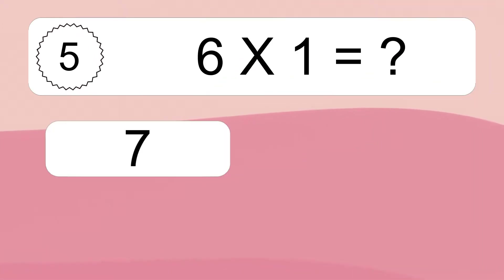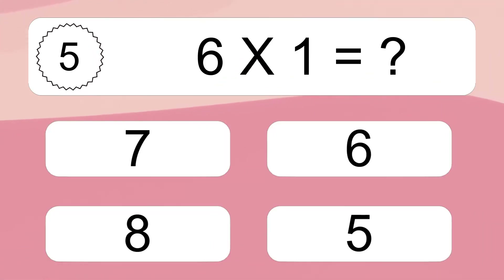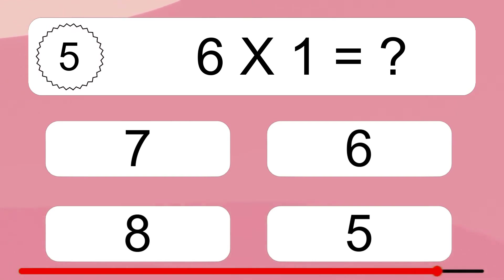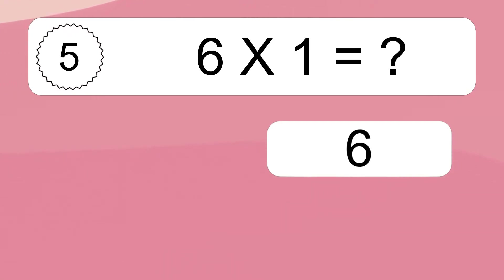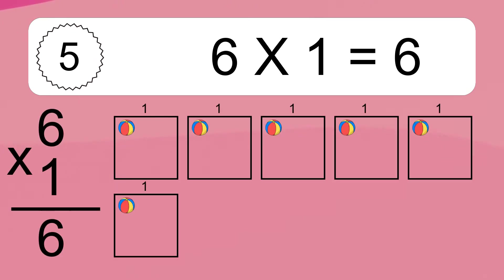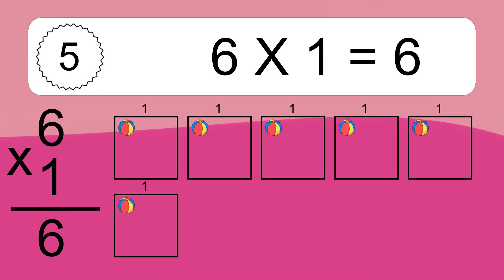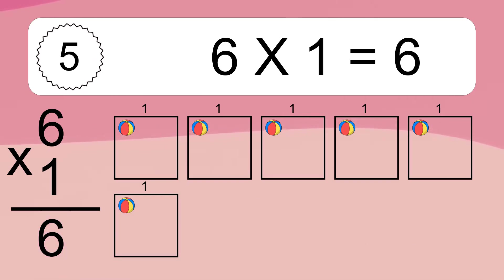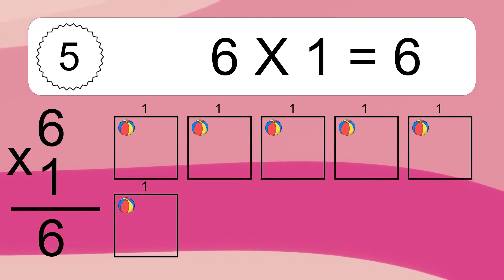Six times one equals what? Six times one equals six. We have six boxes, and each box has one colorful ball inside. If you count all the balls in all the boxes together, you will have six times one balls. This equals six balls.